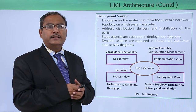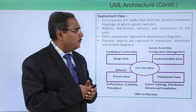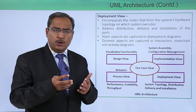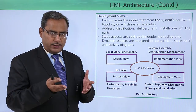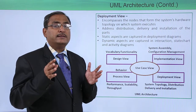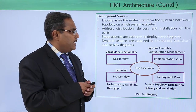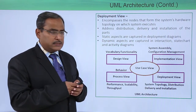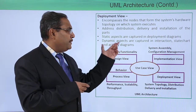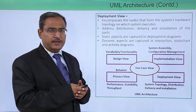The last one is the Deployment View. It encompasses the nodes that form the system's hardware topology on which the system will execute and be deployed. It describes the different nodes that exist and the interconnectivity between them. It also addresses distribution, delivery, and installation of the parts. Static aspects are captured in deployment diagrams, and dynamic aspects are captured in interaction, state chart, and activity diagrams.